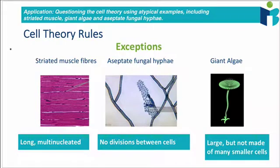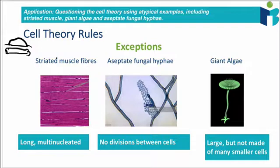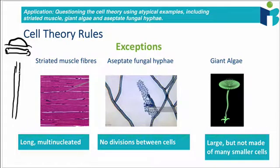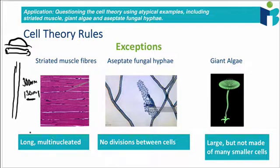Striated muscle fiber is essentially the muscle that makes up skeletal muscle — the muscle attached to bones or that moves bones around. The reason we consider these exceptions to cell theory is that these cells are incredibly long, up to 300 millimeters, which is 30 centimeters. We usually think of cells as very small individual units, so given that the first cells had to be observed using a microscope, you can imagine this isn't really what we would expect.